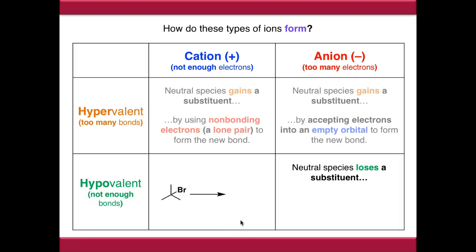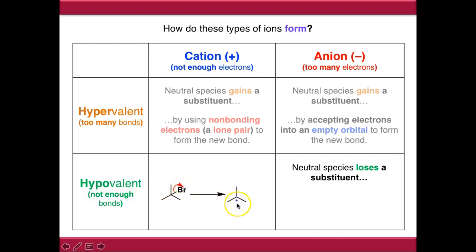If we take t-butyl bromide as an example, we can push the electrons from this carbon-bromine bond onto bromine, which breaks the carbon-bromine bond. Because the electrons are left with bromine, that leaves us with a carbocation and an empty P orbital - that's a hypovalent cation. And to balance the equation, we've also created bromide, which is a hypovalent anion.